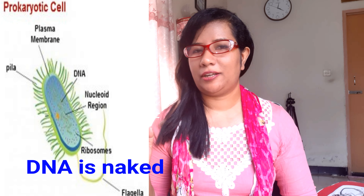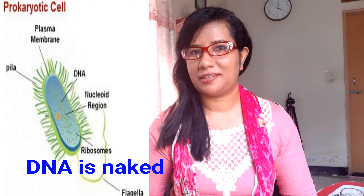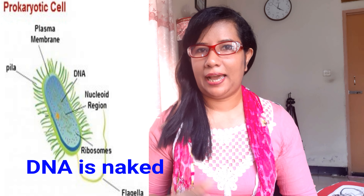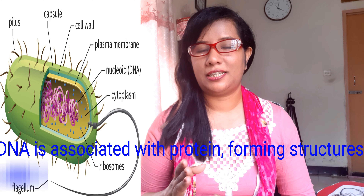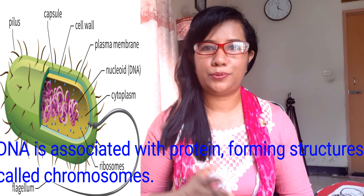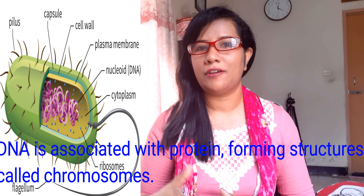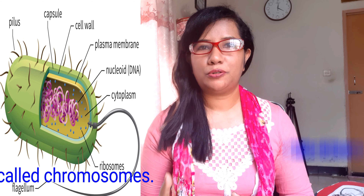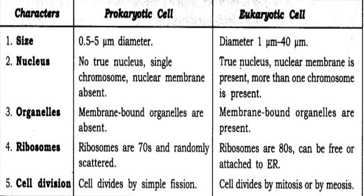Prokaryotic cell DNA is naked. Eukaryotic cell DNA is associated with proteins, forming structures called chromosomes. You must remember that. Prokaryotic cells have slightly smaller ribosomes than those of eukaryotes.